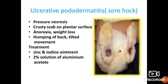Ulcerative pododermatitis or sore hock is more common in animals reared in cages and is due to pressure necrosis. A crusty scab can be observed on the plantar surface. The animal shows anorexia, weight loss, humping of the back and tilted movement. Treatment involves zinc or iodine ointment and 2% aluminium acetate.